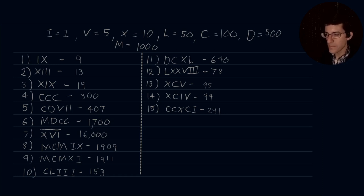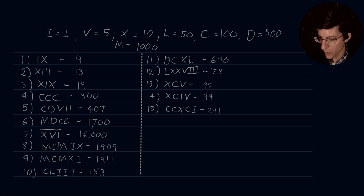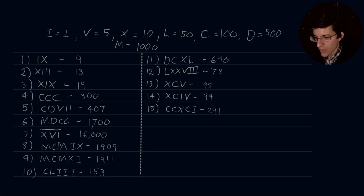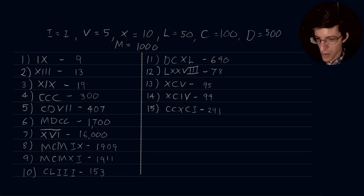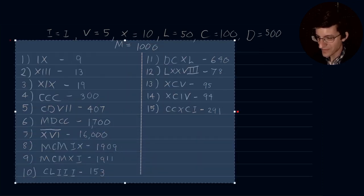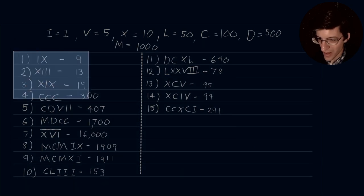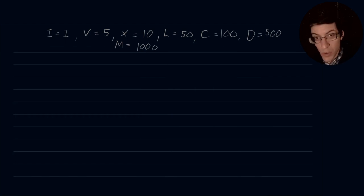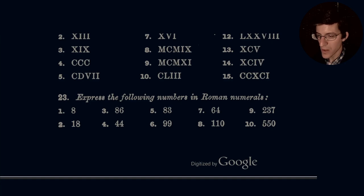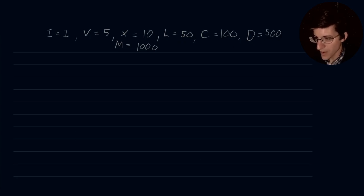That is our homework assignment for the first set. We're going to go ahead and knock out number 23 as well on the homework, because it's very short. This is the reverse: expressing Arabic numerals in Roman numerals. Hopefully you've paused the video to see all of that, because I'm going to delete it now. We'll leave the header so we can use it for working out our other problems. Section 23 is expressing Arabic numerals in Roman numerals.